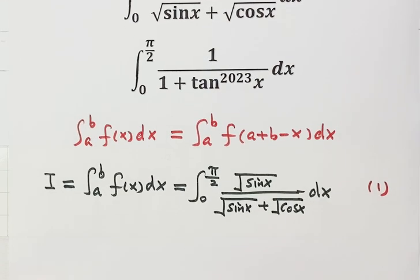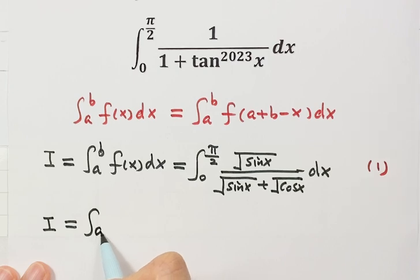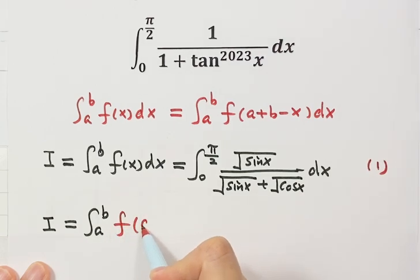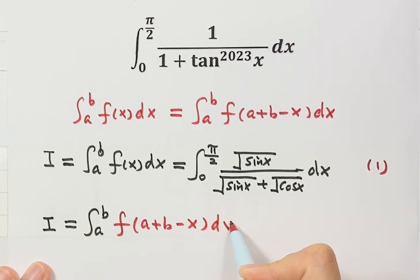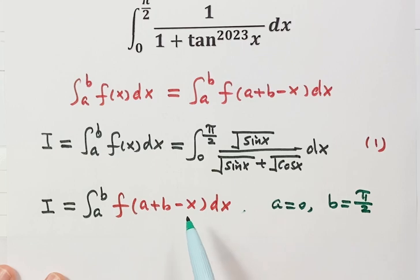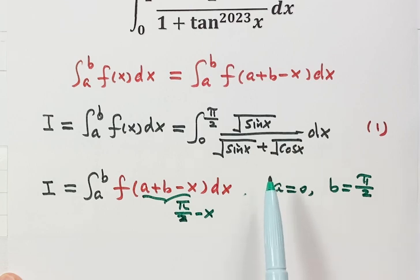Now we can apply the King Property. Since a equals zero and b equals π/2, the substitution gives us a + b − x = π/2 − x. So we replace all x's with π/2 − x throughout the integral.